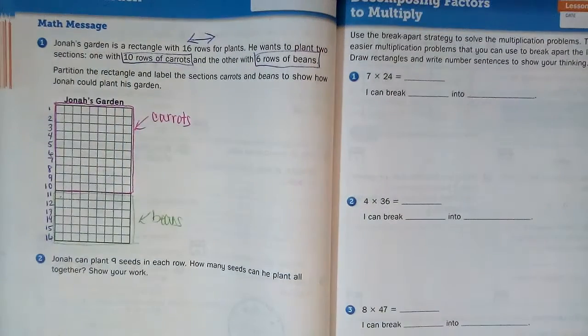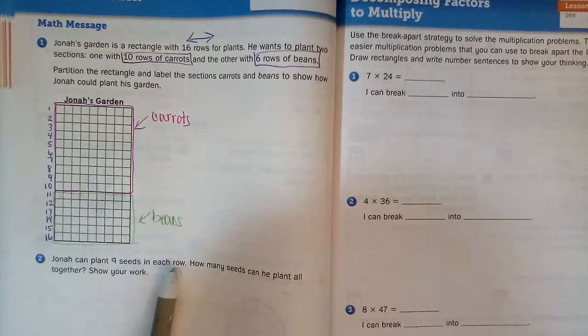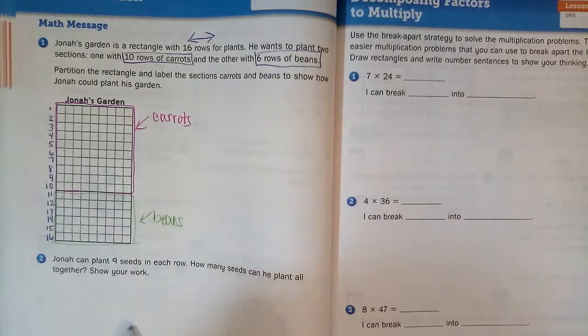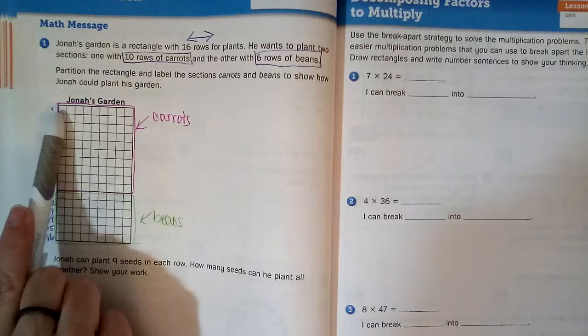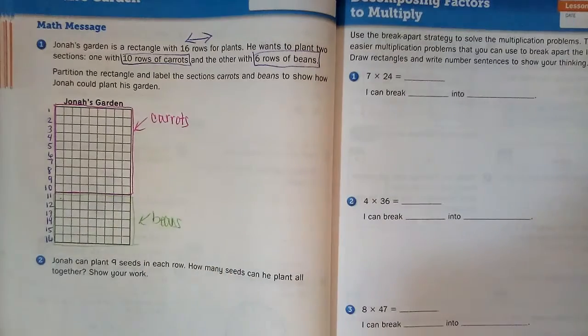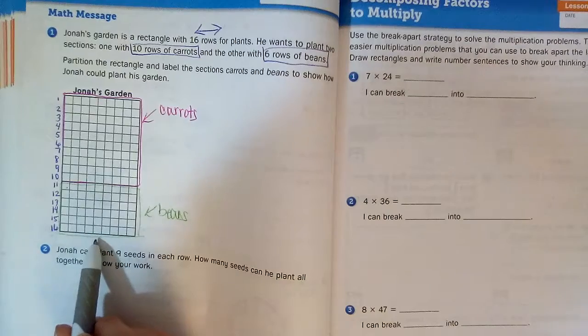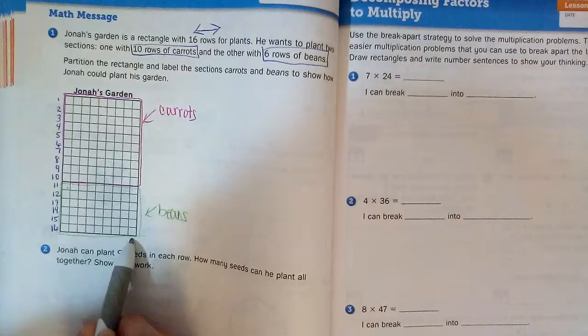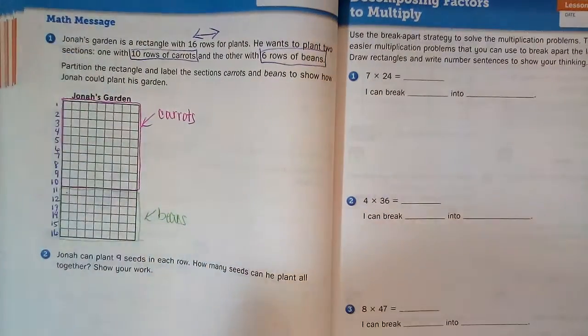All right, check us out! We did that. Number 2 says Jonah can plant 9 seeds in each row. How many seeds can he plant all together? Show your work, and that's where you're gonna do it on your own. I don't think it's wise to count each box one by one. That's silly. You guys can do it better. Think about this: 1, 2, 3, 4, 5, 6, 7, 8, 9. So this is like 6 times 9, this is like 10 times 9. There's your hint. You're doing number 2 on your own.